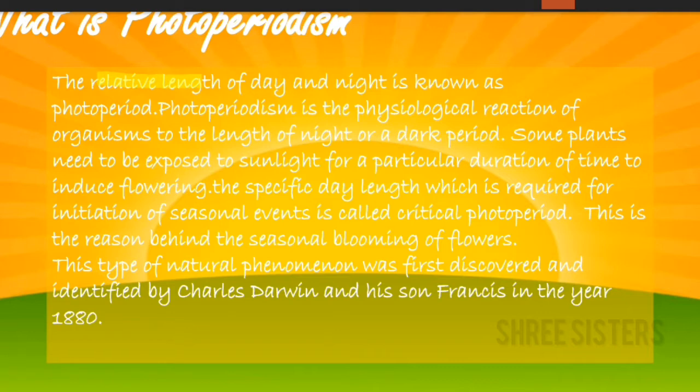Photoperiodism is the physiological reaction that organisms show during the length of the night, dark period, or day. For example, in plants, if sunlight comes for only a specific time, a flower will bloom only then. There is a biological clock inside organisms which helps with the absorption of sunlight and aids in blooming — this is also photoperiodism.